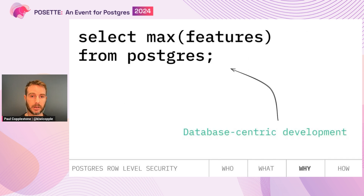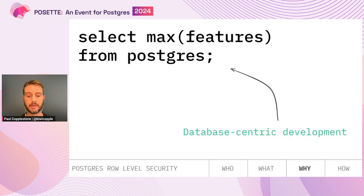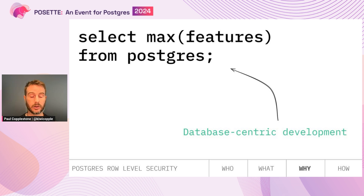The other reason — and probably one that resonates for a lot of people — is that you might just be a bit of a Postgres maxi. We have a database-centric development workflow at Supabase, and it's one of the ways we recommend using Postgres. It's not for everyone, but for those who really like SQL and the features of Postgres, using Row Level Security is a very neat way to develop applications.